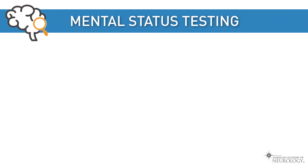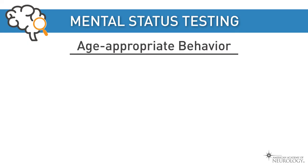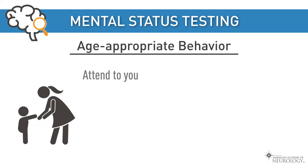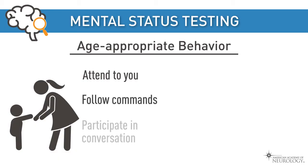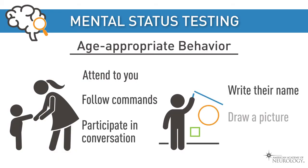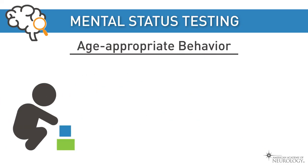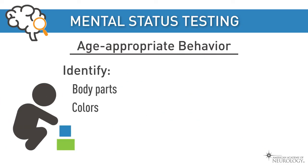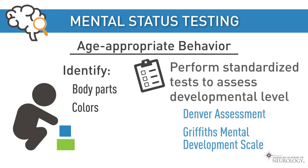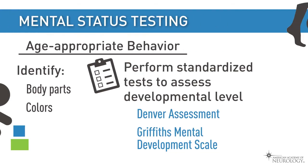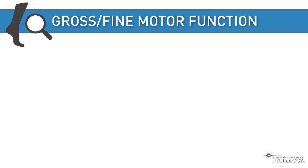On neurological examination, be sure to include mental status testing. Consider what constitutes age-appropriate behavior for your patient: is the patient able to attend to you, follow commands, participate in conversation, write his or her name, draw a picture, identify body parts, or identify different colors in the room? Occasionally you may want to have the child perform standardized tests that assess developmental level, which may require specialized training to administer.